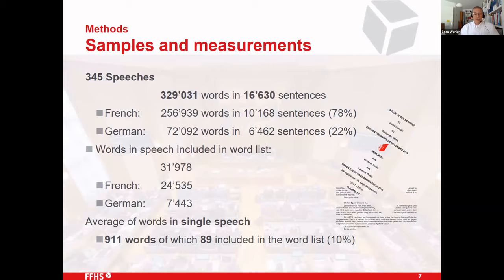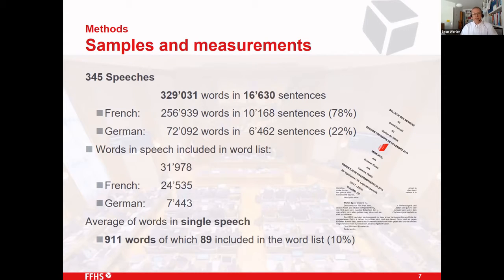We used 345 speeches comprising more than 300,000 words in more than 60,000 sentences. The parliament had French and German speeches — about 80 percent were in French and 20 percent in German. On average a single speech contained 900 words, and about 10 percent of those — around 90 words — were also included in the word list. So our analysis is based on an average of 90 words per speech. These 900 words include every word, not only the content words like nouns, adjectives, and verbs.